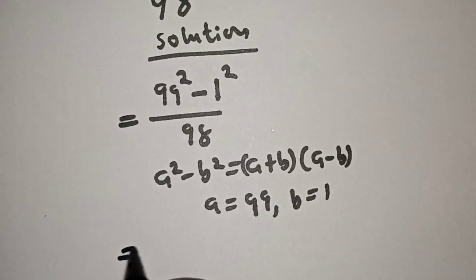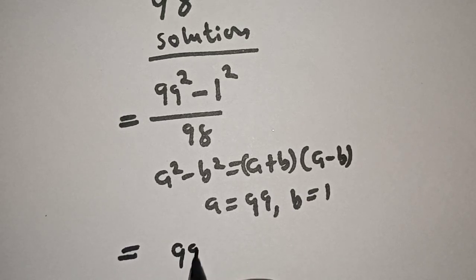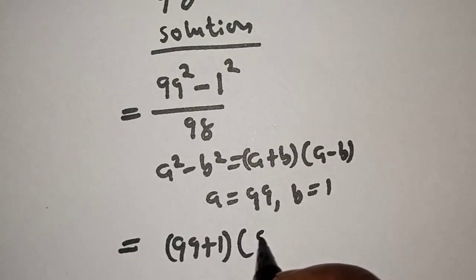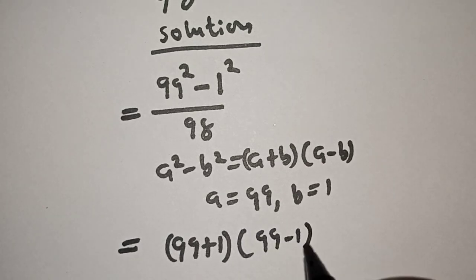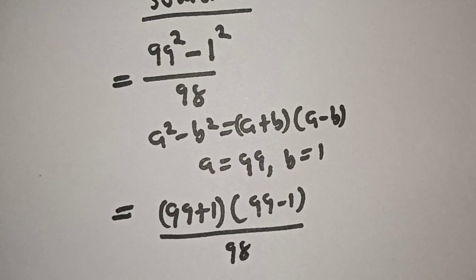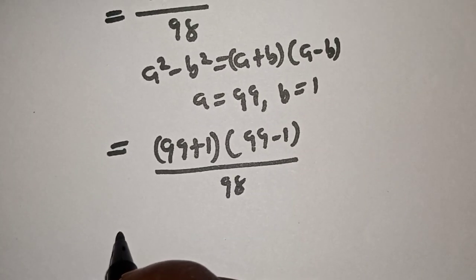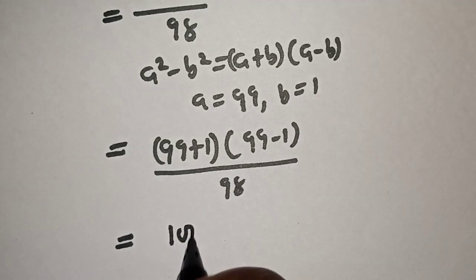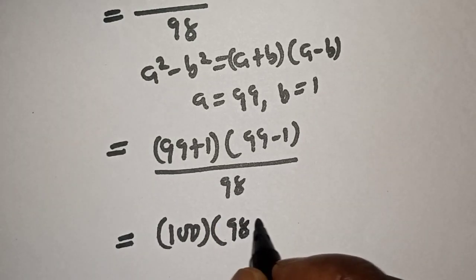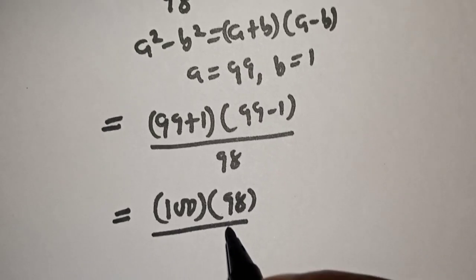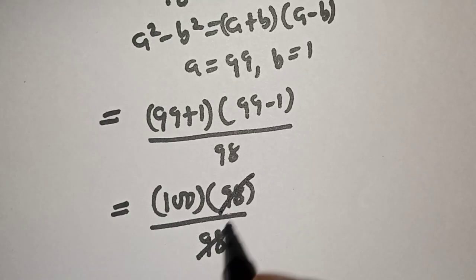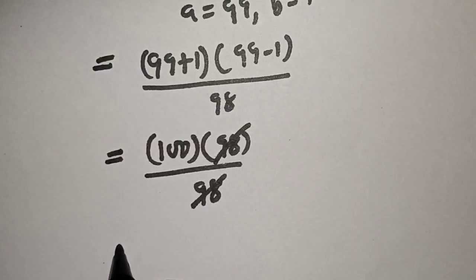This equals (99 + 1) multiplied by (99 - 1) over 98. This equals 100 multiplied by 98 over 98. The 98s cancel, so this equals...